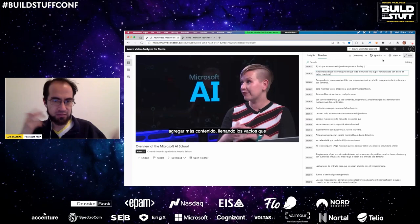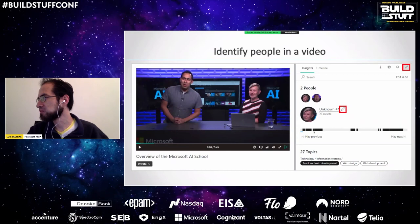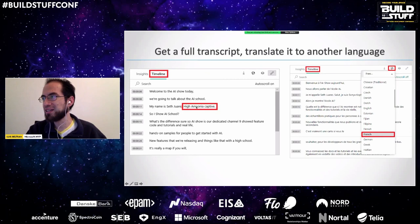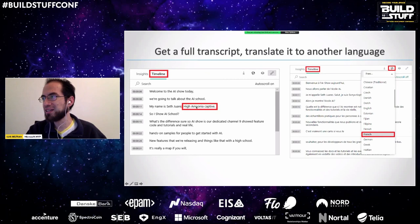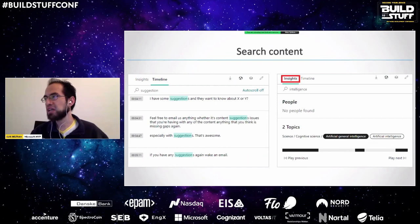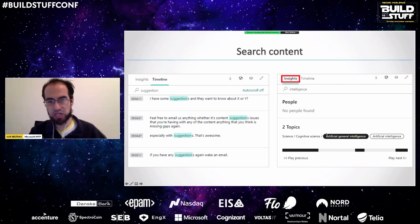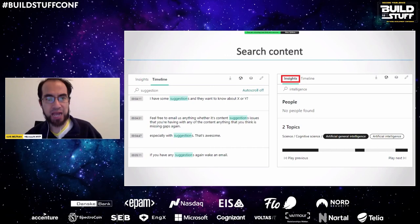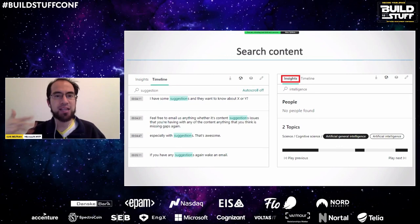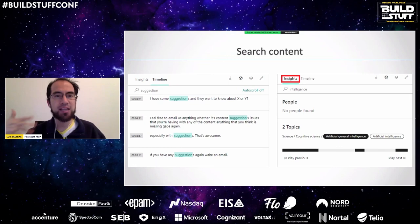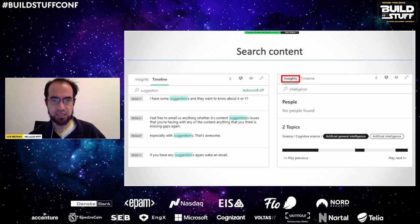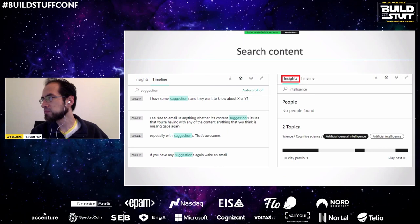To summarize: we can change the name of a person if not correctly detected, translate to several languages, get insights showing where specific words, topics, or keywords were mentioned. This service helps you get value without needing to be a developer — you just upload and analyze. If you're not satisfied with something you can always edit it, or even remove key topics if you're focusing on something particular.